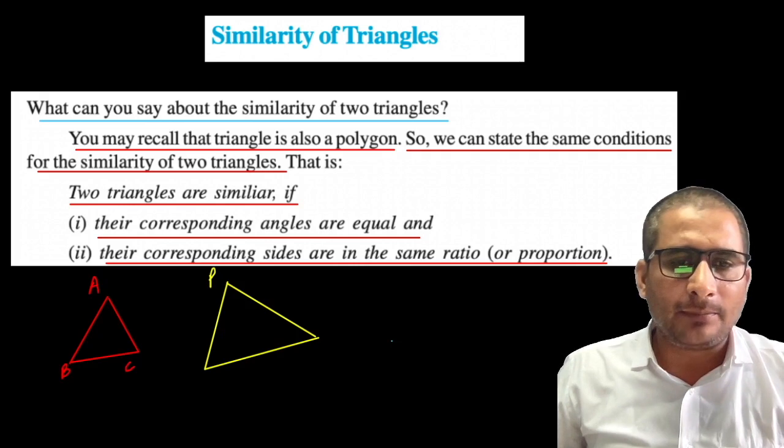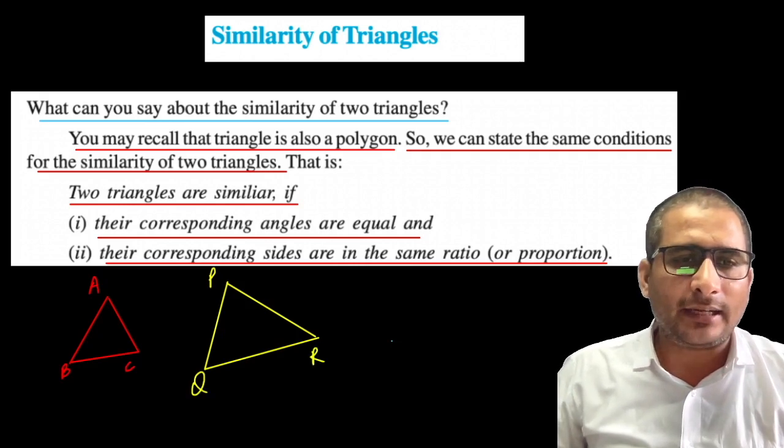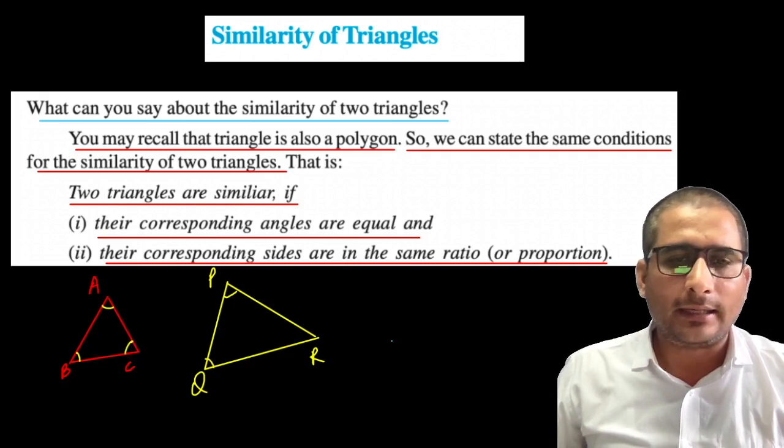Triangle ABC and triangle PQR. First condition: angles equal. Angle A equal to angle P, angle B equal to angle Q, and angle C equal to angle R.